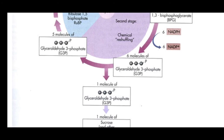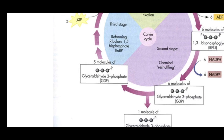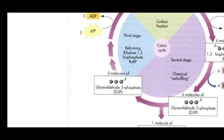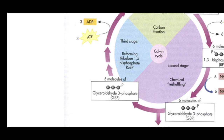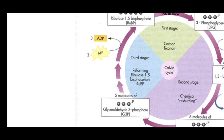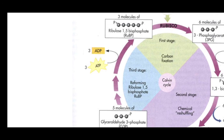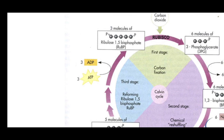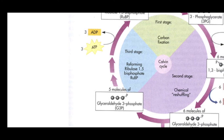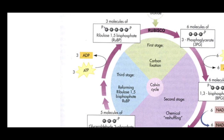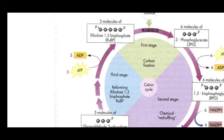The remaining five molecules of G3P enter the reformation step, where RuBP is regenerated. Another ATP molecule is used here, donating its phosphate group so that glyceraldehyde-3-phosphate is converted back into ribulose-1,5-bisphosphate, completing the cycle.